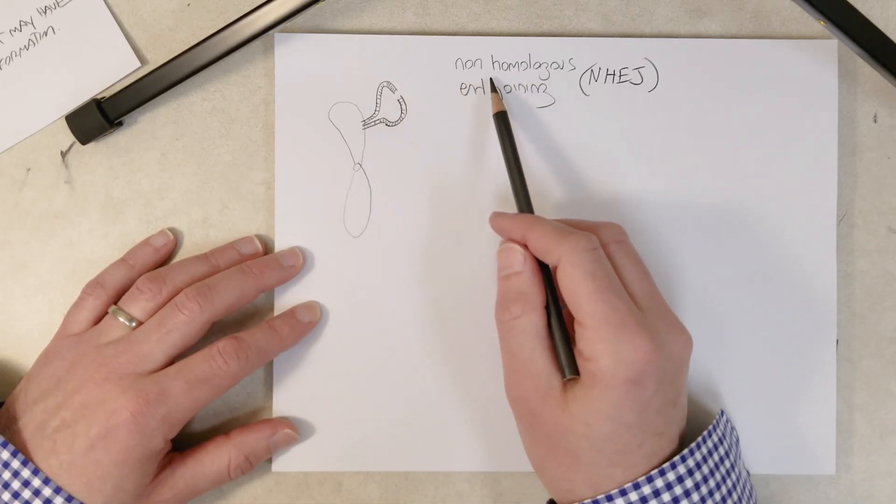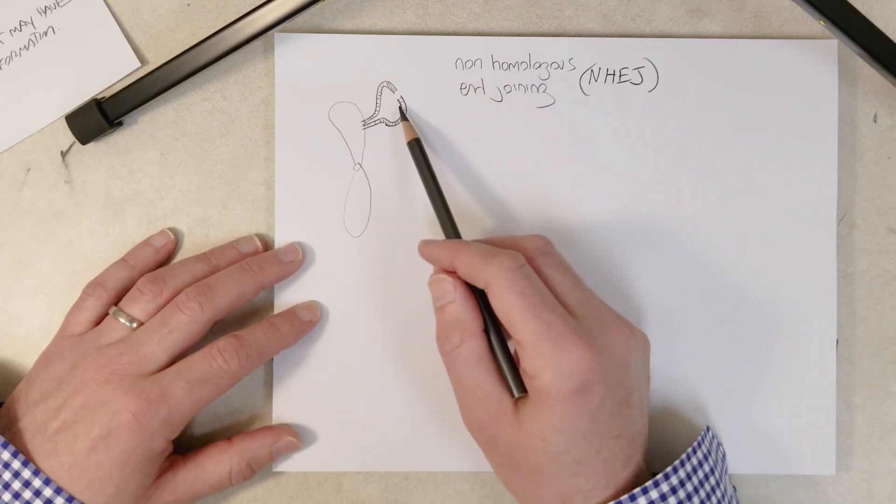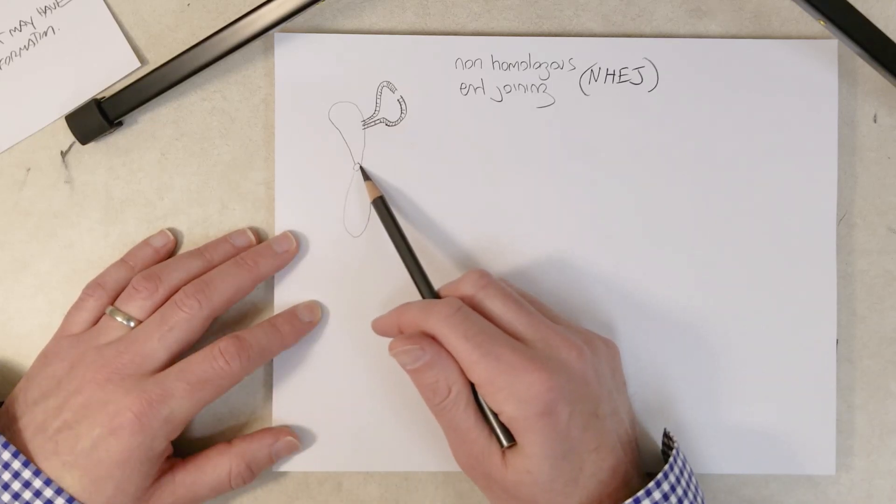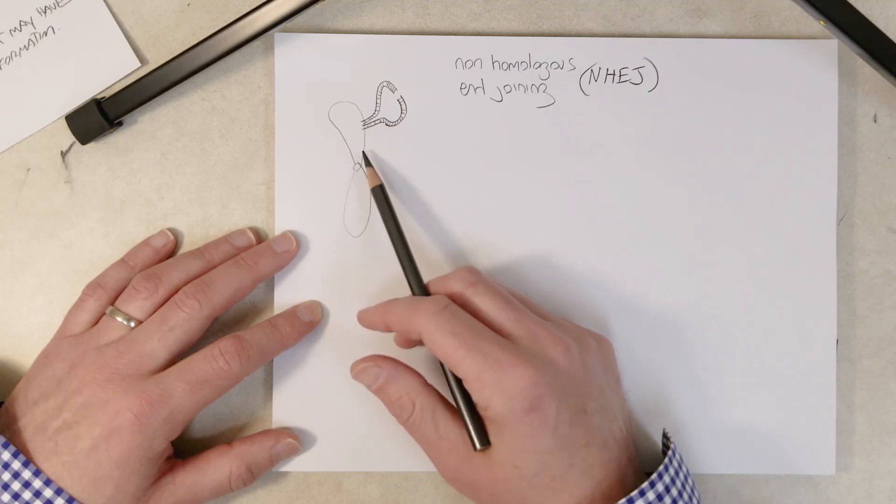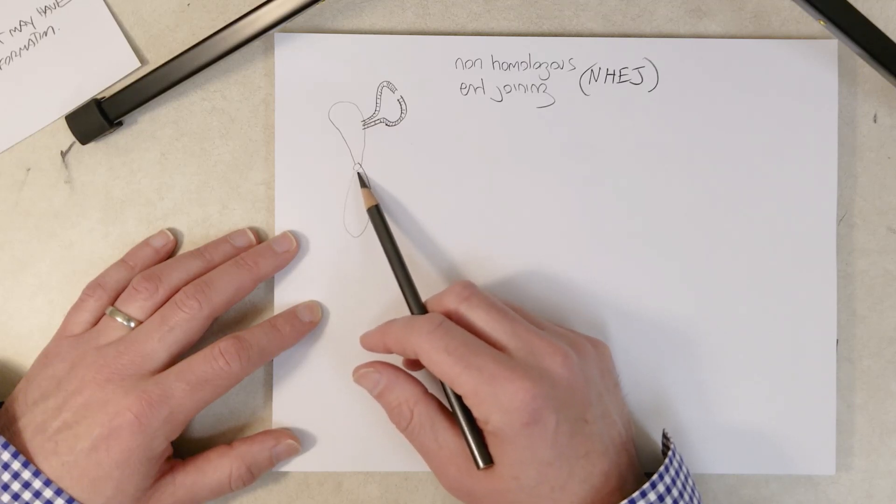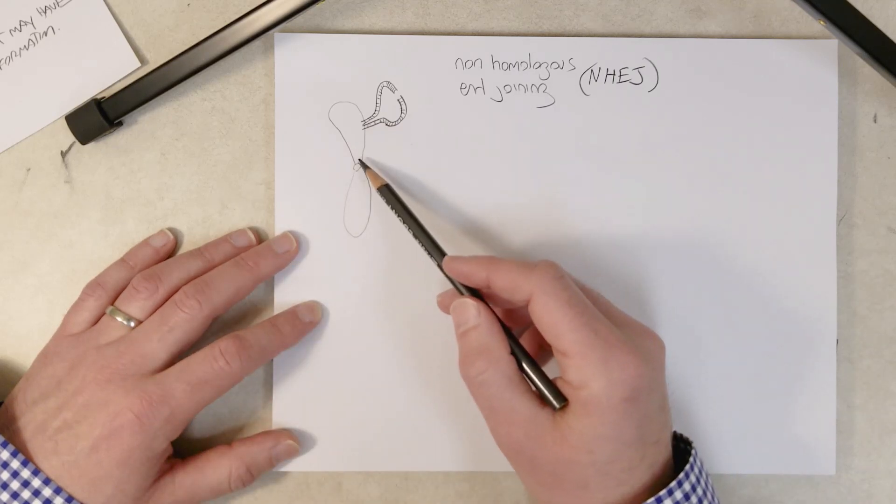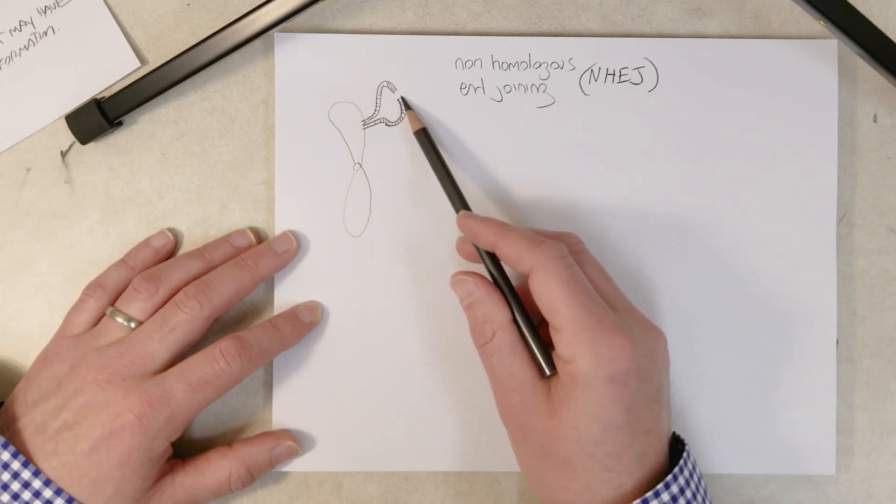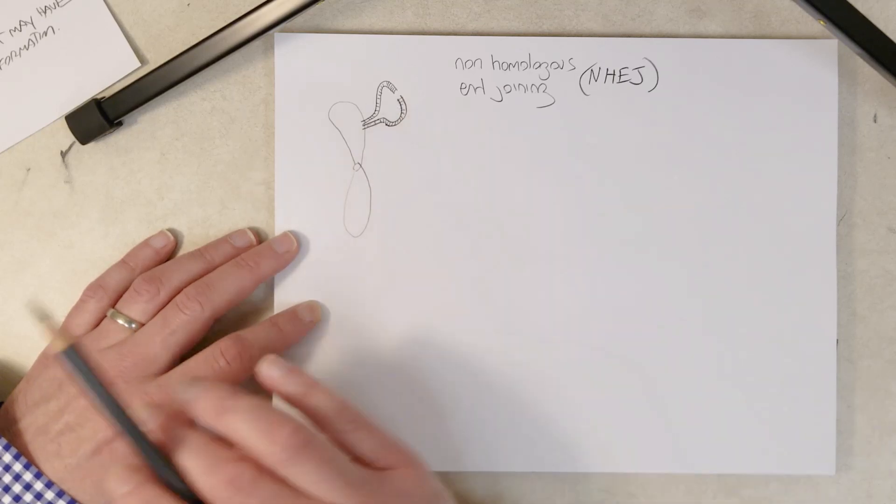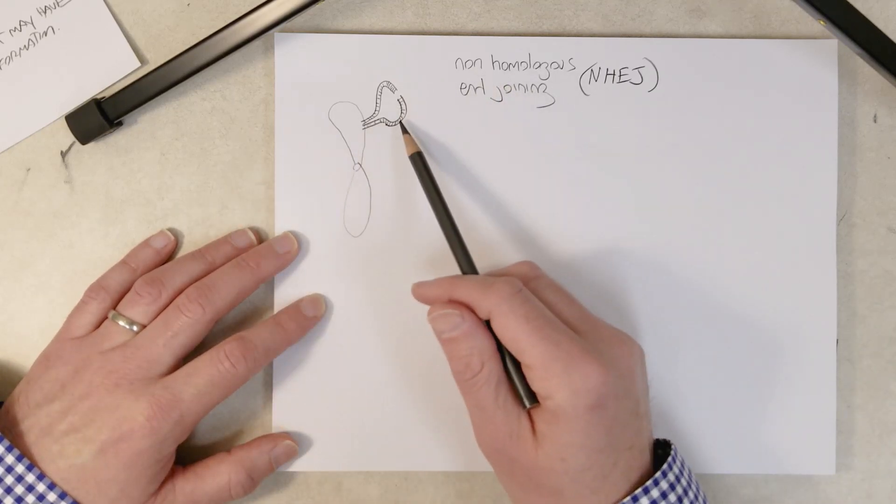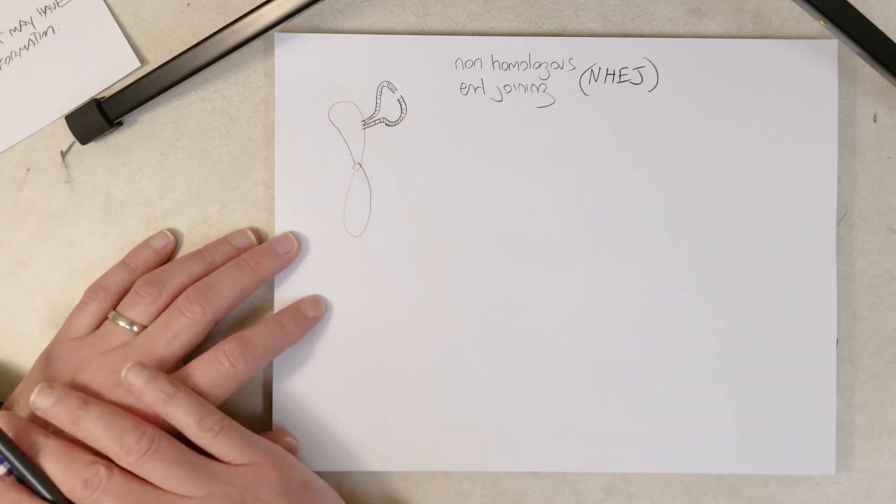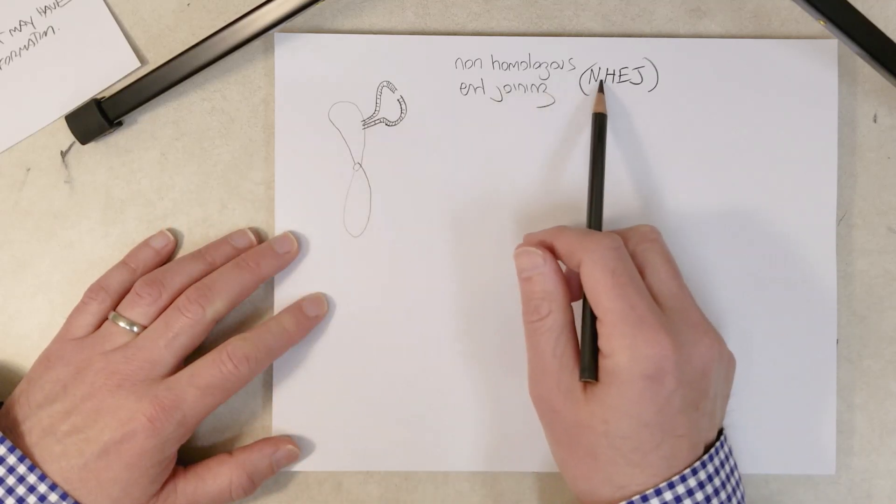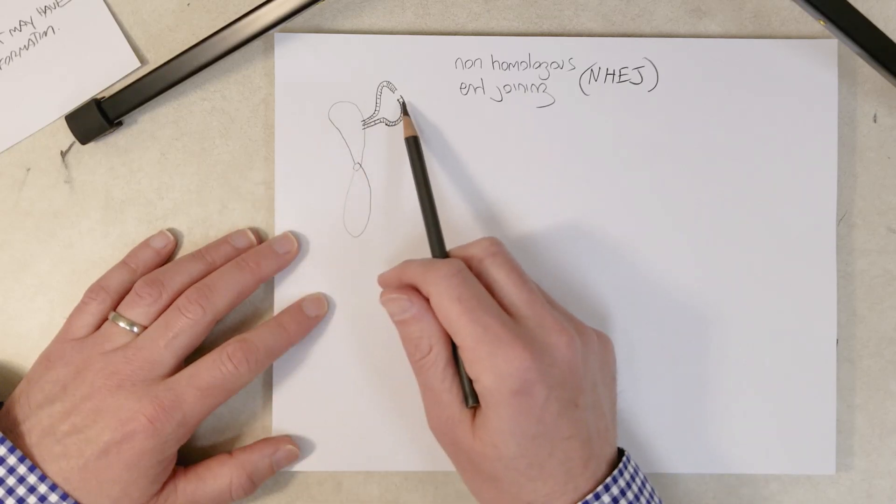So why does the cell need this? Well, one case might be in the G1 phase of the cell cycle when there's no sister chromatid. The DNA hasn't been replicated yet, so there's no sister chromatid. And for one reason or another, the cell can't find the homologous chromosome to use as a template. And some organisms, some eukaryotes are haploid, so there's no homologous chromosome there to use as a template. So non-homologous end joining can be used when there's no donor template.